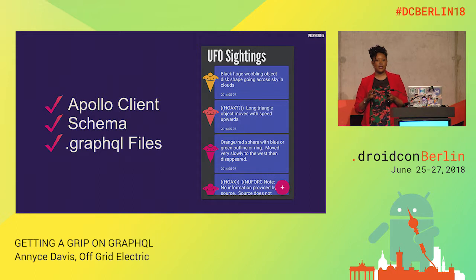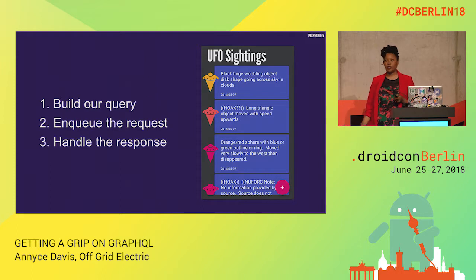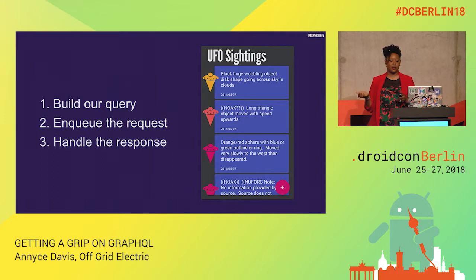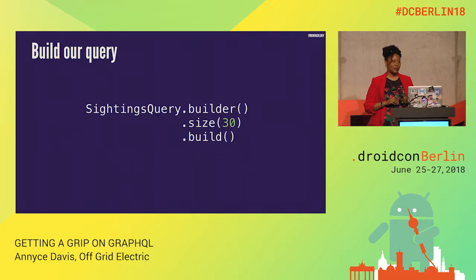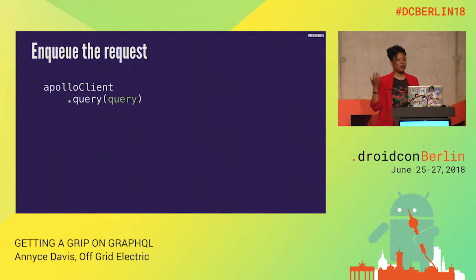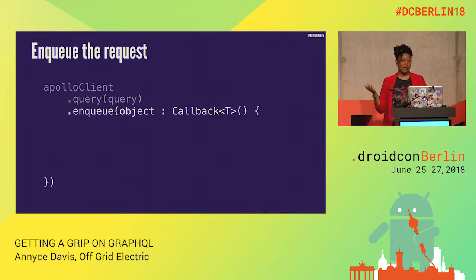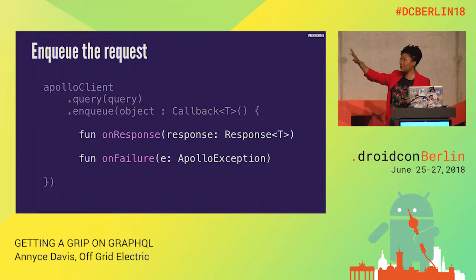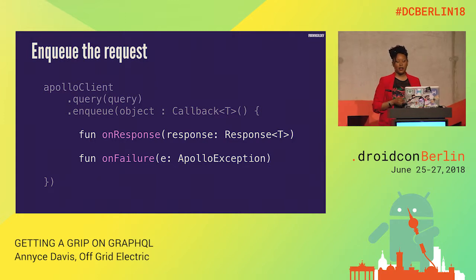To convert these three things into our list of UFO sightings, it's a three-step process: build the query, enqueue the request, and handle the response. Building a query is simple — there's a builder, you pass in any variables you're interested in, then call build. Next, you use the Apollo client's query method, give it your query, and enqueue the response. This does the work on a background thread, and you override two methods — onResponse and onFailure — to handle everything from your GraphQL server.